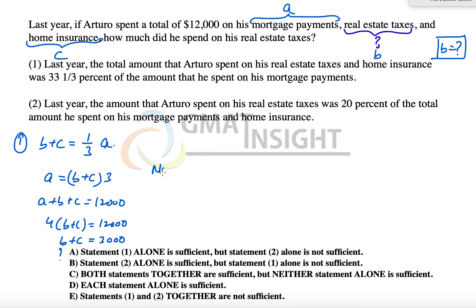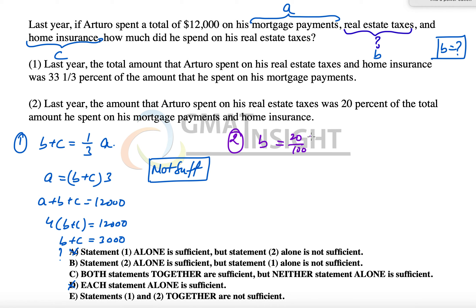Since this information is not sufficient to answer the question in the absence of information about C, the first statement is not sufficient, and options A and D are out. The second statement says that last year, the amount Arthur spent on real estate taxes, that means B, is equal to 20% of the total amount spent on mortgage payment and home insurance, that means A plus C.